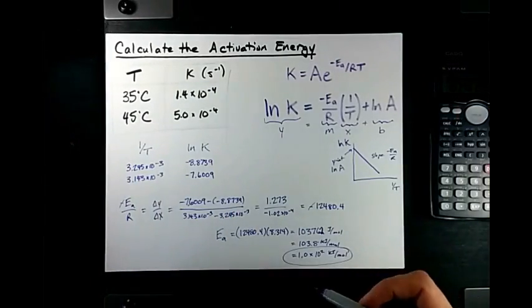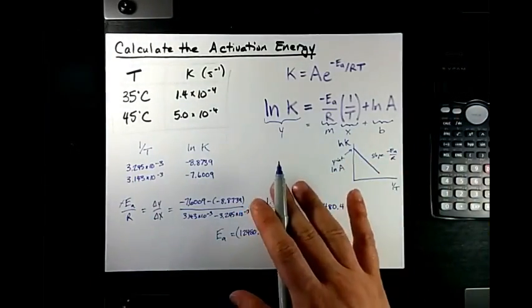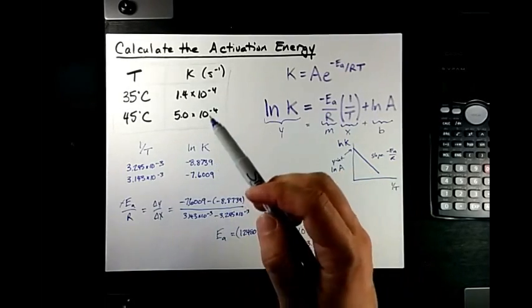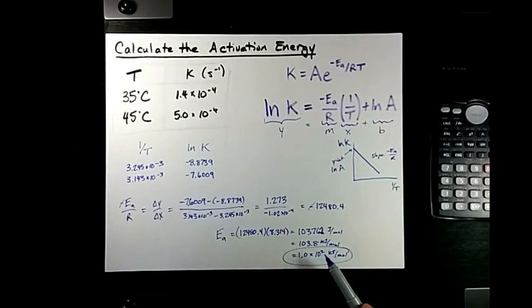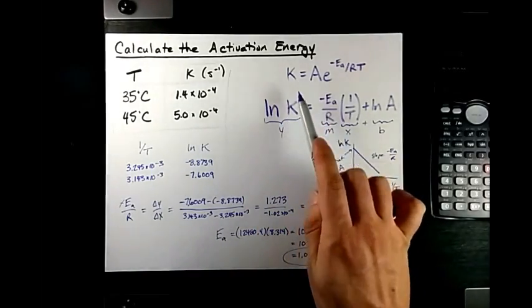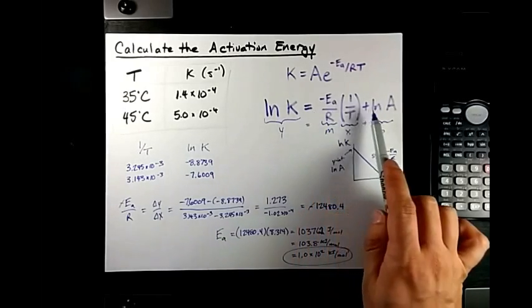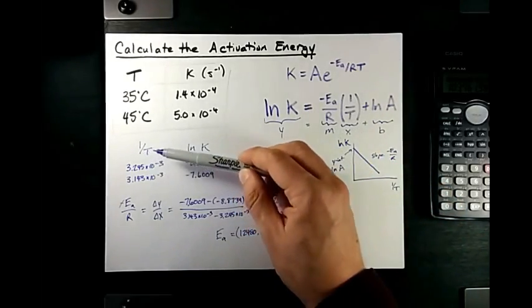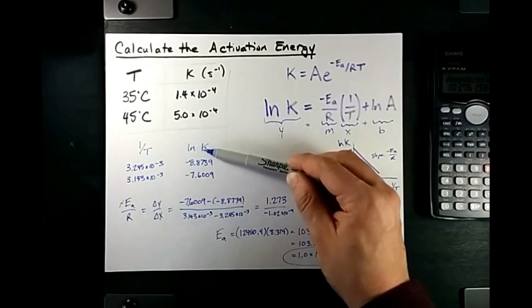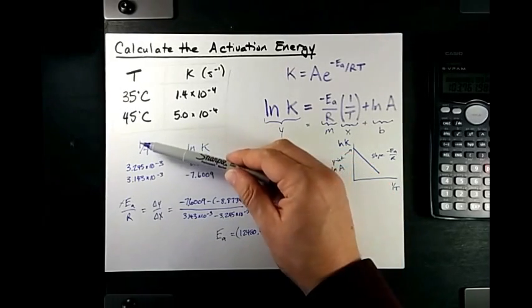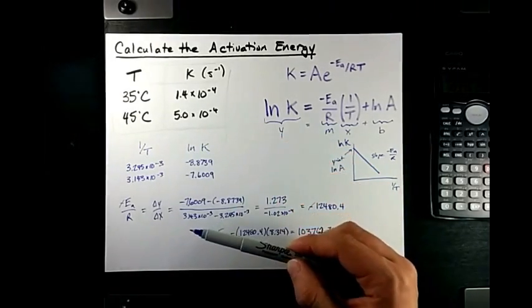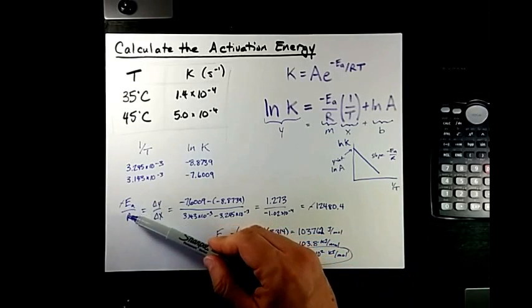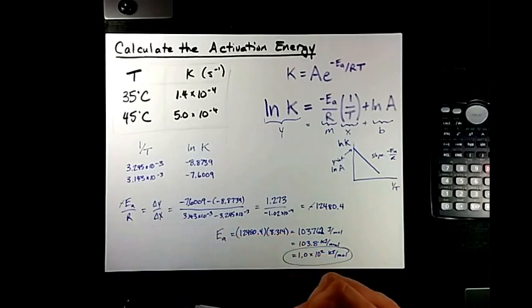That's sig fig stuff. I hate it as much as you do. But, point is that you can calculate the activation energy by using the logged form of the Arrhenius equation and knowing that if you use ln K as your y-values and 1 over T as your x-values that negative EA over R is your slope.